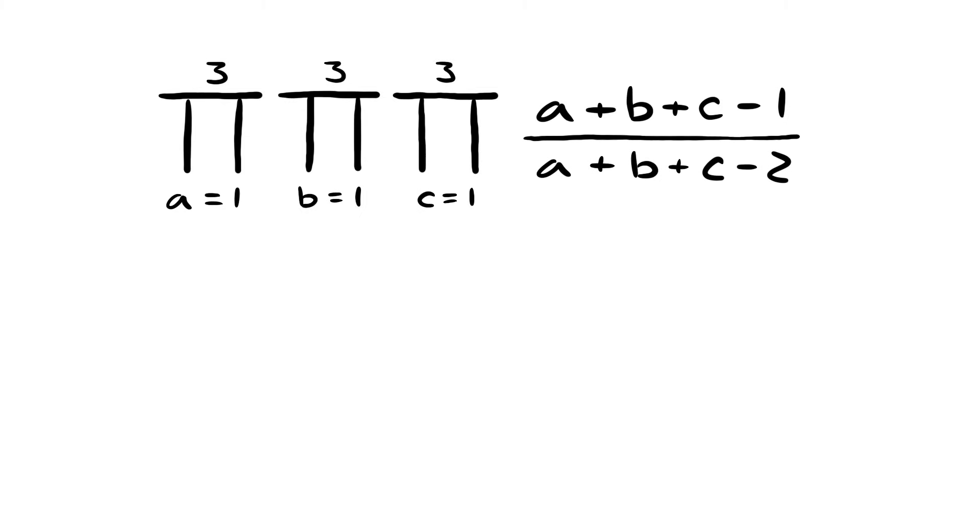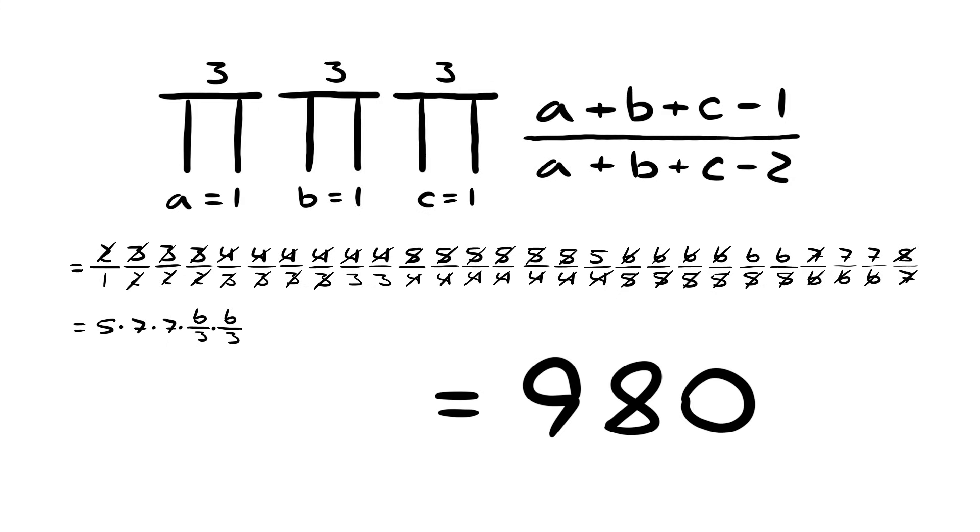So for a 3 by 3 by 3 hexagon, we get 980 ways to solve this puzzle, of course ignoring the different colors of pieces.